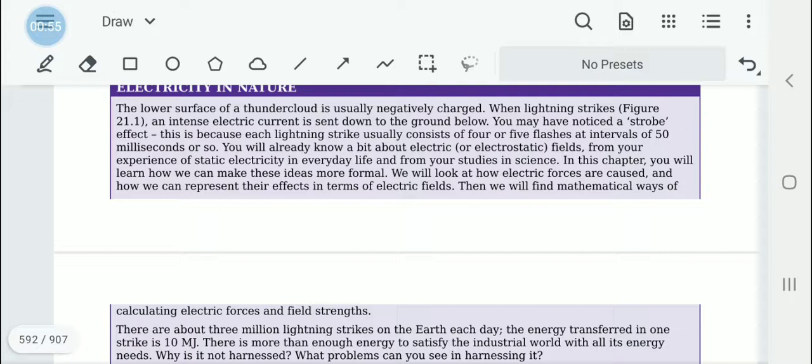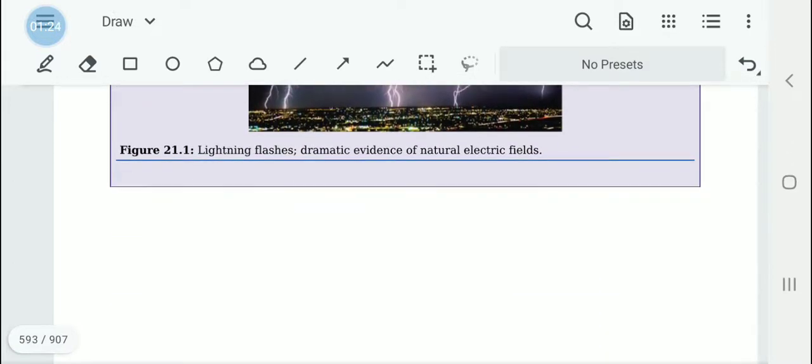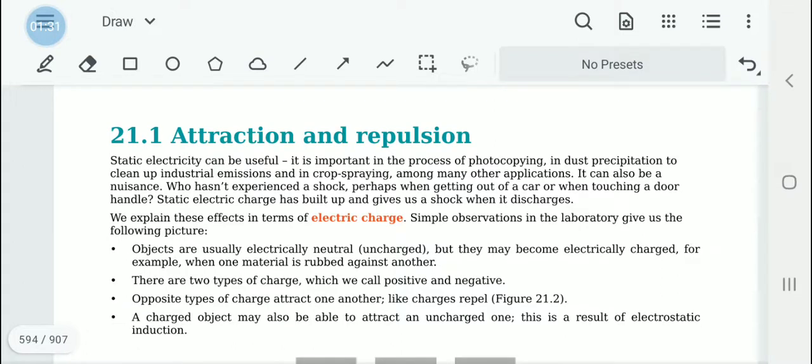There are about three million lightning strikes on Earth each day. The energy transferred in one strike is 10 megajoules. This energy can be harnessed, and in the future it might be the most common form of energy provided. Here we are laying the groundwork for that. We have learned about like charges and unlike charges, attraction and repulsion in static electricity.